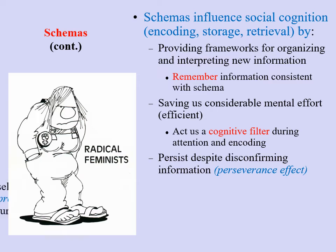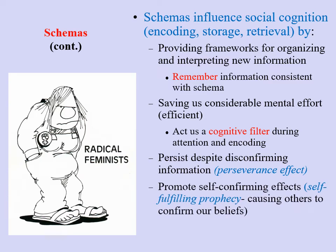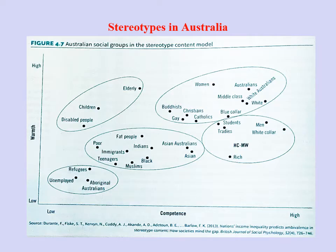In every culture and subculture there arise stereotypes of typical people familiar to members of that culture. Durante and others in 2013 illustrated common typical stereotypes in Australia and argued that most stereotypes can be distinguished along two fundamental dimensions: competence and warmth. You can classify different groups in terms of how they are perceived as either warm or cold, and competent or incompetent.